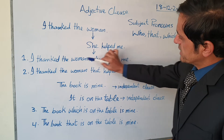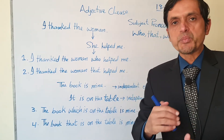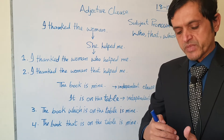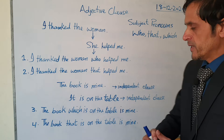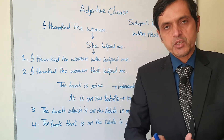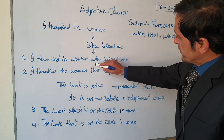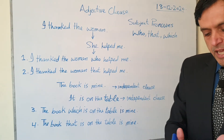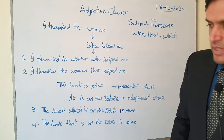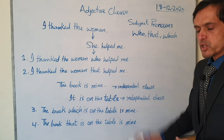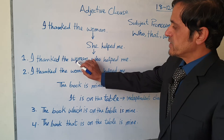The adjective clause modifies this noun 'woman.' When you modify something it means you bring changes or increase or decrease quality. The definition of an adjective is: a word which modifies a noun or pronoun. So these are called adjective clauses because they play the role of an adjective. Just as an adjective modifies a noun or pronoun, an adjective clause also modifies a noun or pronoun.